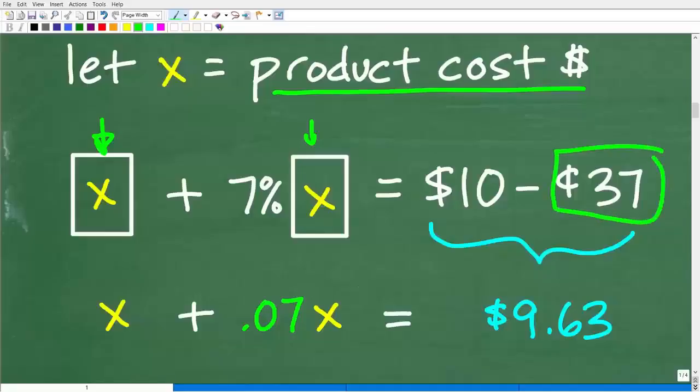Now, of course, that's now x. And that's going to be equal to the difference of our change. We got back $0.37, but we gave the cashier $10. So how much did this actual transaction cost? Well, $9.63, because $10 minus $0.37 is $9.63.